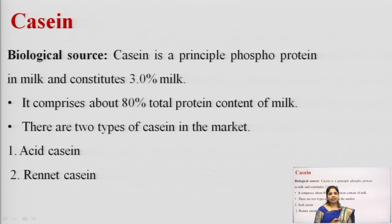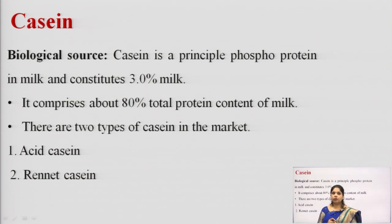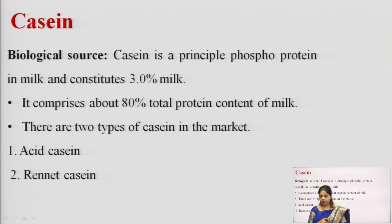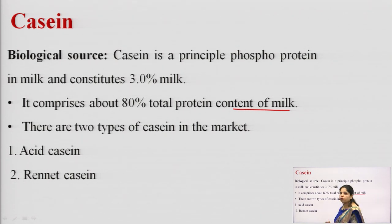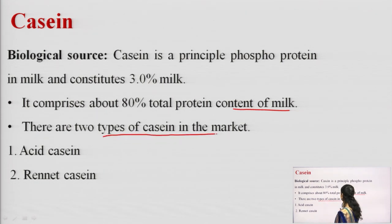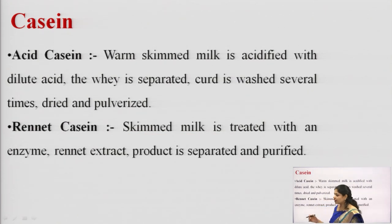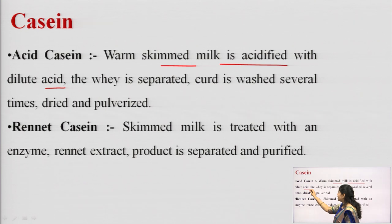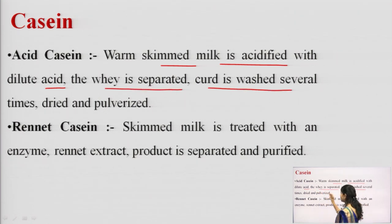The second protein-containing drug is casein. Casein is the principal phosphoprotein in milk and it constitutes about 3% of milk. It comprises about 80% of the total protein content of milk. There are two types of casein: acid casein and rennet casein. For acid casein, warm skimmed milk is acidified with dilute acid, the whey is separated, and the curd is washed several times and dried and pulverized.